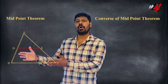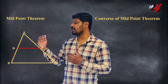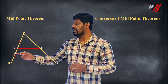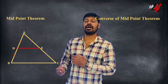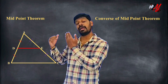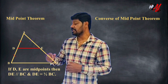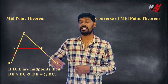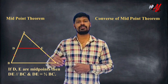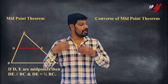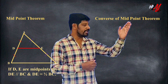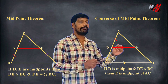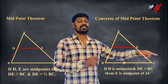In triangle ABC, D and E are midpoints of sides AB and AC respectively. The midpoint theorem states: the line segment joining the midpoints of two sides of a triangle is parallel to the third side and half of the third side.